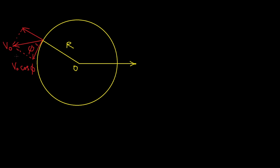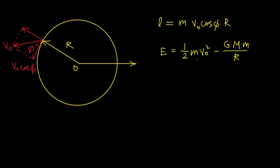We start by decomposing the initial velocity into radial and tangential components. Recall that angular momentum is defined as the cross product between the radius vector and the linear momentum, so only the tangential component of the initial velocity contributes. Thus L = m·v0·cos(φ)·r. The total energy E is given by ½mv0² (initial kinetic energy) minus GMm/r (initial potential energy). These are the conserved angular momentum and total energy from which we calculate p and e.